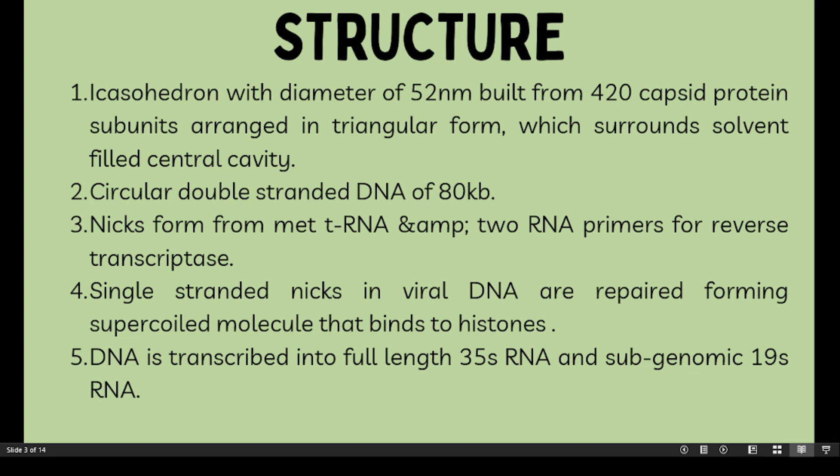The Cauliflower Mosaic Virus contains a circular double-stranded DNA molecule of about 8 kilobases, interrupted by nicks that result from the action of RNase H during reverse transcription. These nicks come from the met-tRNA and two RNA primers used in reverse transcription.